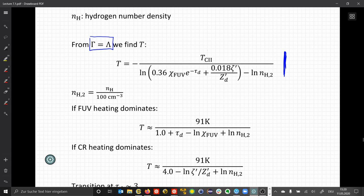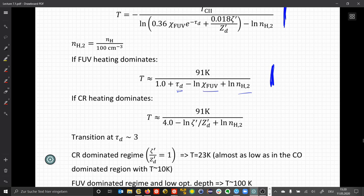When we look at the two cases that FUV dominates, so we have FUV heating, we can determine the temperature that is established in the ISM, which is just a function of the UV intensity, the density and the optical depth. And if we have cosmic ray dominating, then we have here just the cosmic ray ionization rate and the metallicity as a factor in the denominator. The transition between these two regimes is at tau at about 3. When we are at a tau of 3, UV photons cannot penetrate deeper into the cloud, but cosmic rays can, and so they start to take over in the energy balance.